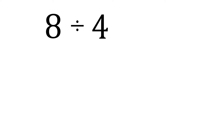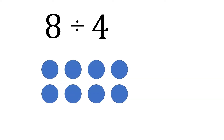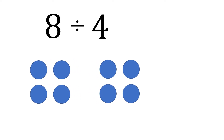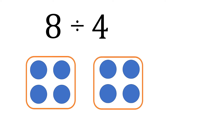Let's visualize this. You have the 8 positives, and then we will group them by 4 positives. So we have the first group and the second group — 2 groups total. That means positive 8 divided by positive 4 is positive 2.